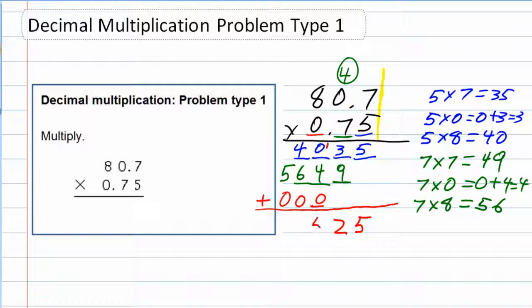The 1 and the 4 add up to 5. The 4 and the 6 add up to 10. So 0, carry the 1. And the 1 and the 5 gives me another 6.